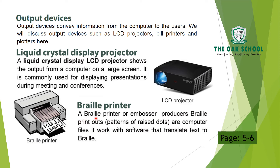Braille printer and embosser: a Braille printer produces Braille printouts — patterns of raised dots — from computer files. It works with software that converts text to Braille. Braille printers work like this: they produce raised dots so that computer files can be read by visually impaired users, and the software translates the text into Braille.